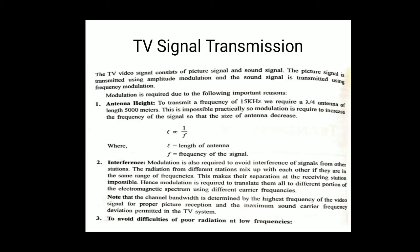The TV video signal consists of the picture signal and sound signal. Basically, the TV signal is divided into two parts: the first part is the video signal and the second part is the audio signal. The picture signal is transmitted using amplitude modulation and the sound signal is transmitted using frequency modulation techniques.